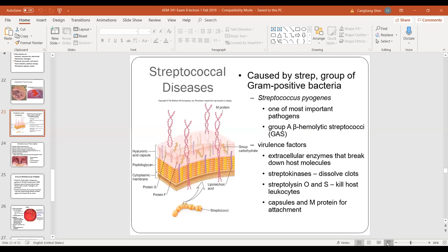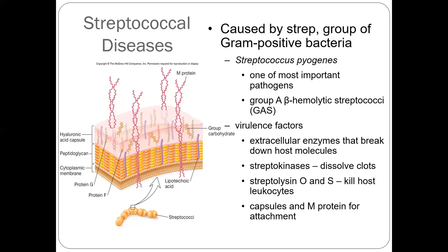We're going to go back to slides to talk about Streptococcus. Streptococcus pyogenes is one of the most important pathogens — we call it Rebecca Lancefield Group A beta-hemolytic streptococcus. Beta-hemolytic means a completely transparent zone of hemolysis of blood cells on blood agar. This organism is very invasive because it has extracellular enzymes that break down host molecules. It can dissolve clots via streptokinase, and streptolysin O and S can kill leukocytes (white blood cells).